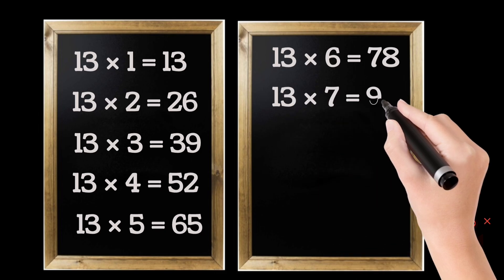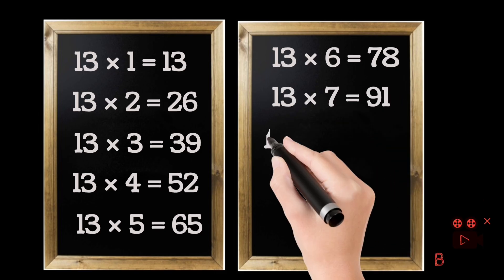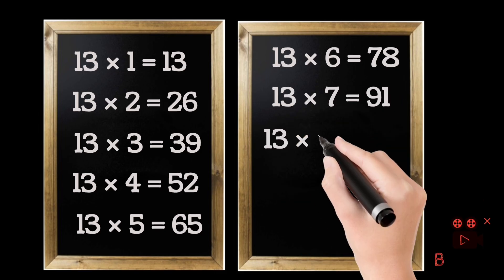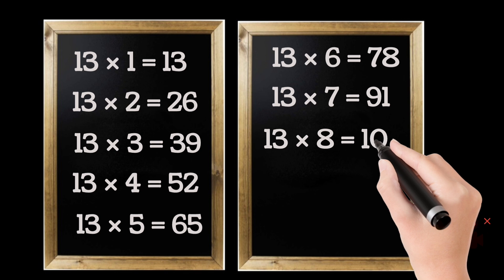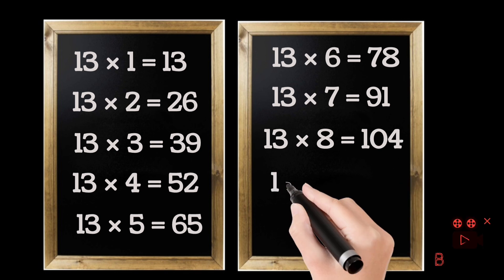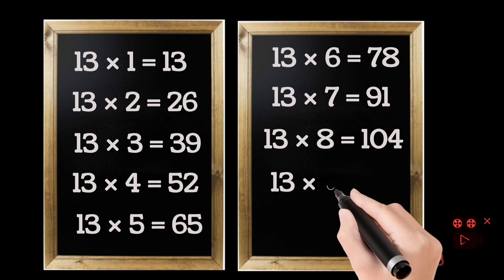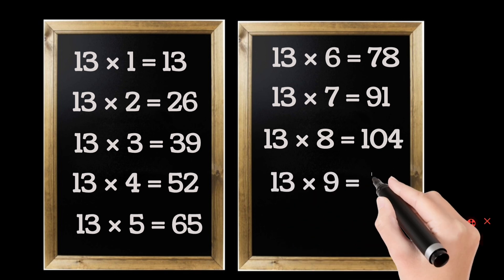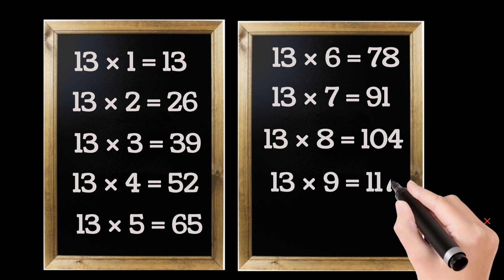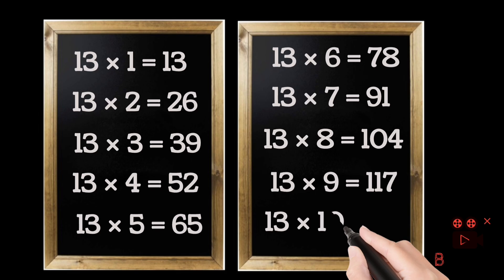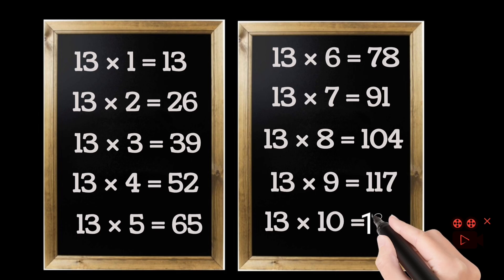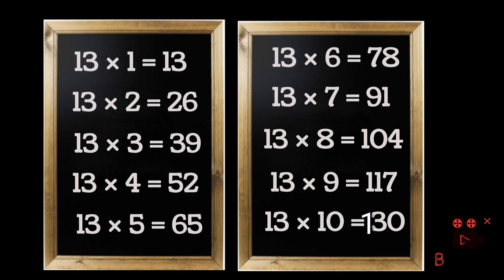13 sevens are 91. 13 eights are 104. 13 nines are 107. 13 tens are 130.